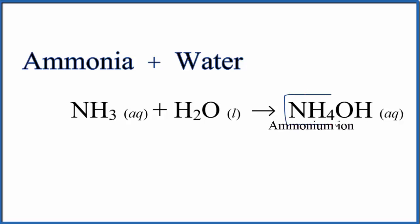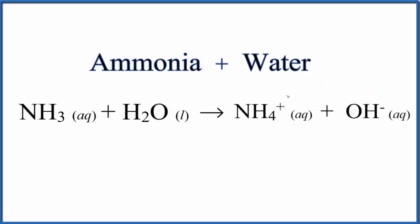We have the ammonium ion, NH4, with an ionic charge of 1 plus. The hydroxide has an ionic charge of 1 minus, so there's an ionic bond between these two. But in water, they dissociate, giving us the ammonium ion and the hydroxide ion, both aqueous.